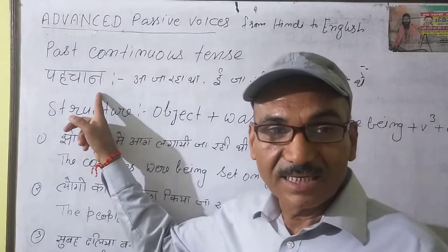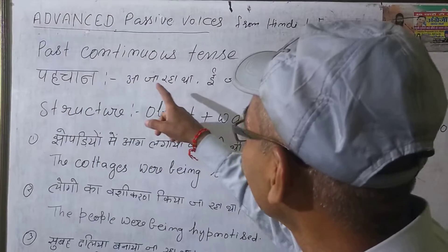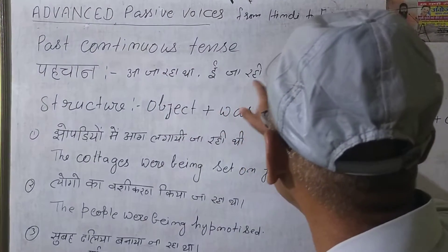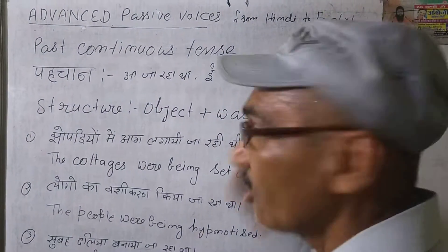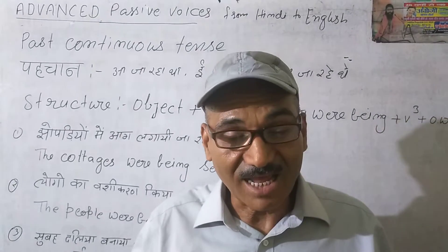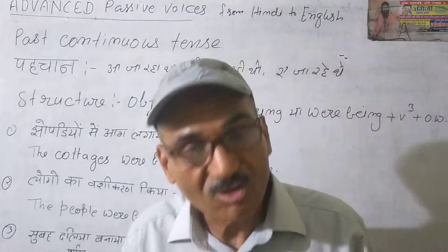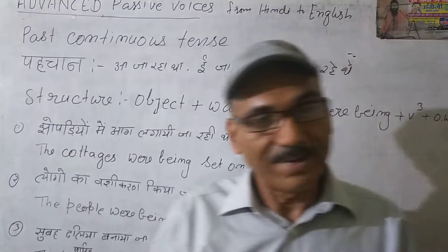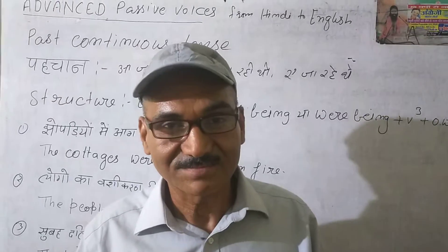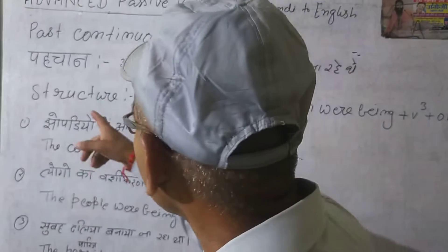पहचान — हिंदी की वाक्यों में क्या आता है? Dear students, look: 'जा रहा था', 'जा रही थी', और 'जा रहे थे' — इस टाइप की wording जब last में आती है, तो हम समझ जाते हैं ये वाक्य हमारा passive voice में ही बनेगा।